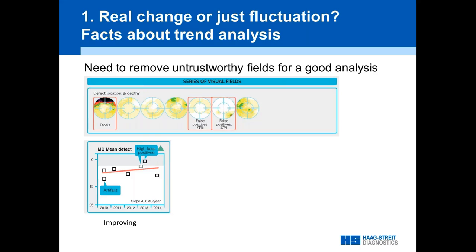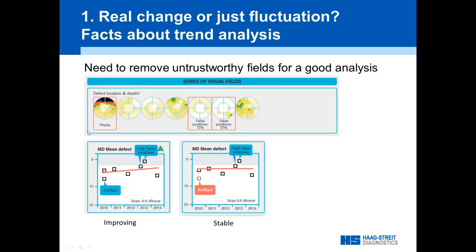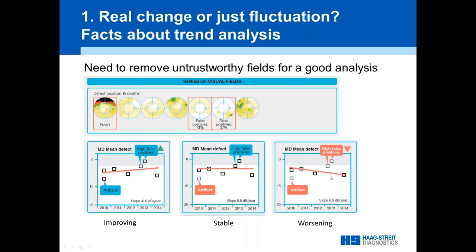Here's a real extreme example: a patient with a ptosis artifact in the first test and very high false positive rates in two subsequent tests, causing them to apparently perform much better. Running a trend analysis gives you a green upward arrow — this patient appears to be improving. But is it really? If you remove the ptosis test and the high false positive tests, suddenly the trend reverses and you find very clear progression that you may have missed otherwise. In the iSuite software you can interactively select or deselect fields — just click in the software.